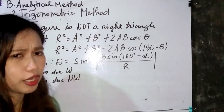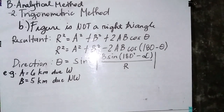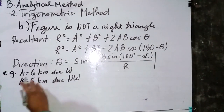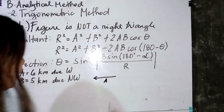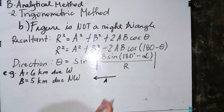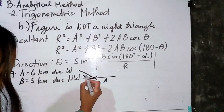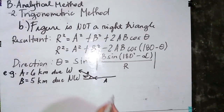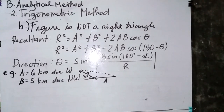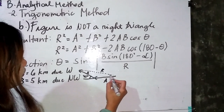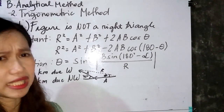For the next example, vector a is 6 kilometers due west and vector b is 5 kilometers northwest. Northwest has a 45-degree angle. Illustrating with the polygon method and connecting the head and tail of vectors a and b gives us our resultant. The angle of the resultant must always lie on the x-axis.